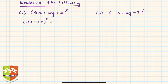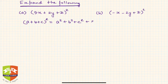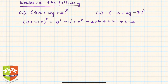The identity is: (a + b + c)² = a² + b² + c² + 2ab + 2bc + 2ca. Now all terms are positive here, so there is no negative sign and it will be very easy for us to do this.